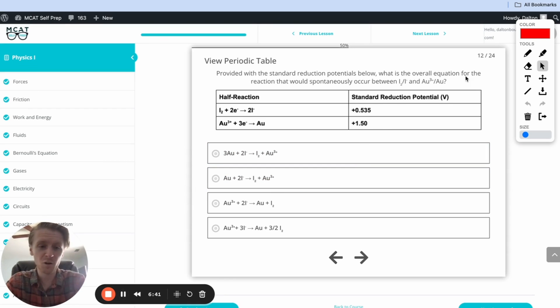All right, so like we talked about before, we've got a higher standard reduction potential right here, which means this is the one that's going to be reduced. Remember oil rig. Reduce is gain electrons. So this equation we can keep just the way it is. Au³⁺ plus 3e⁻ goes to Au. Perfect.